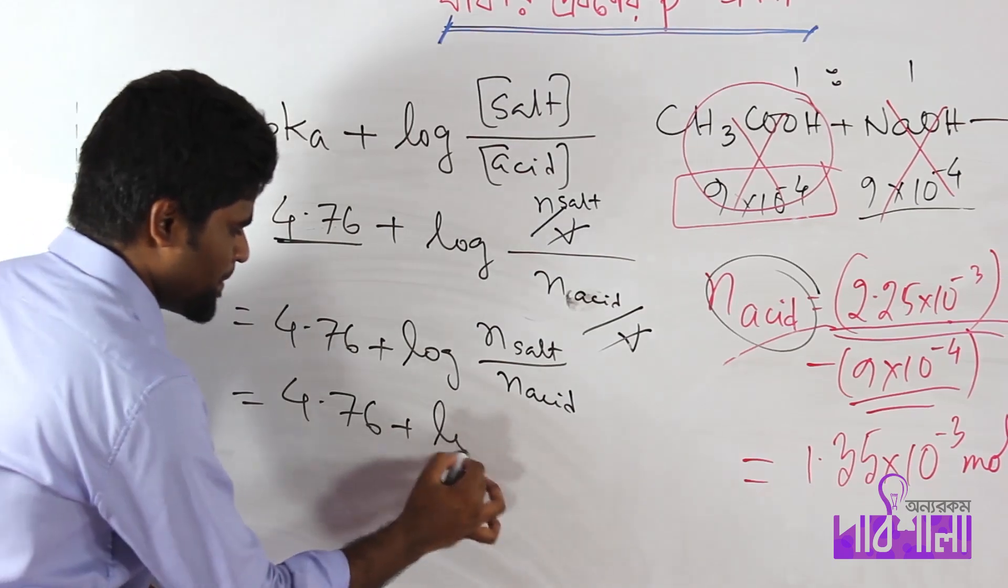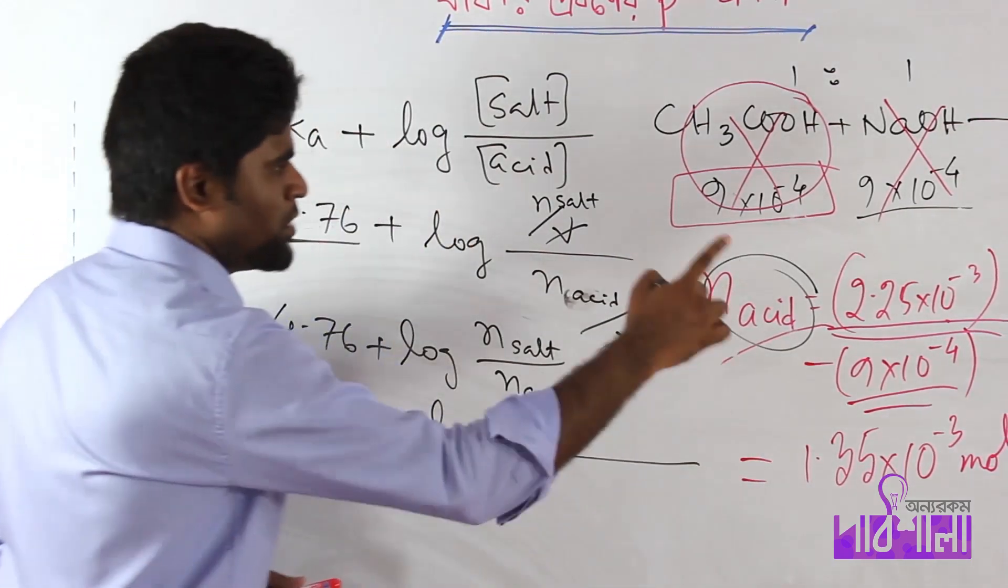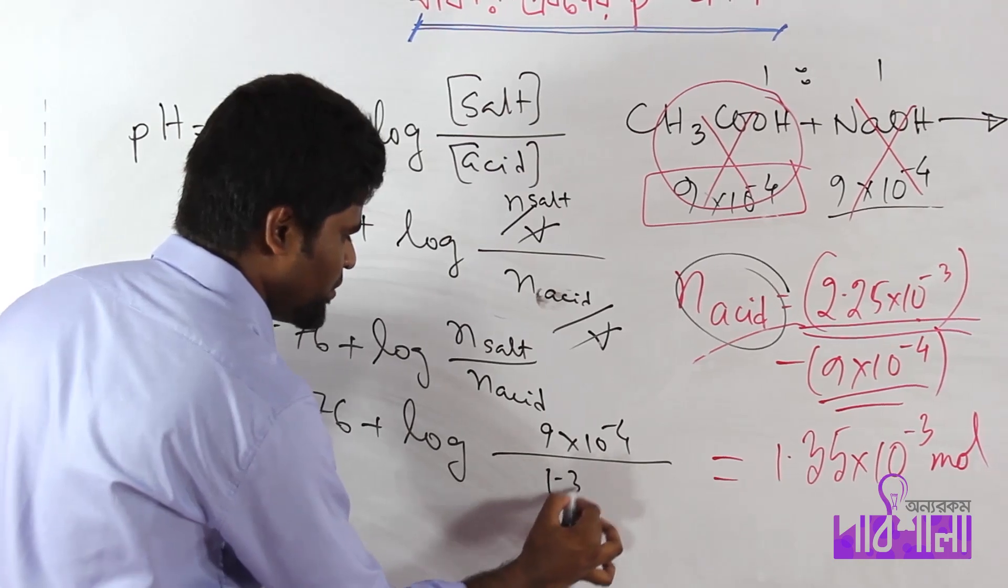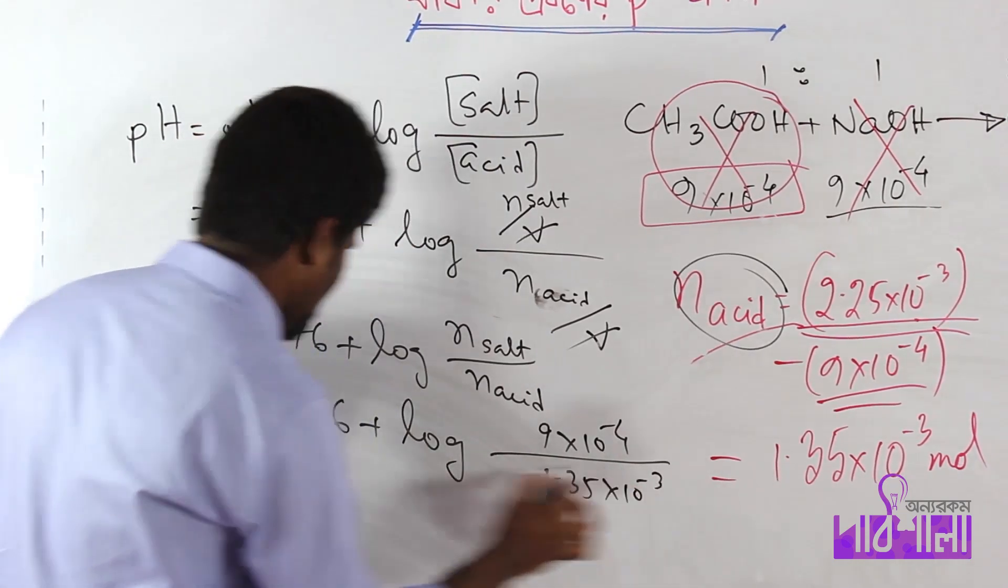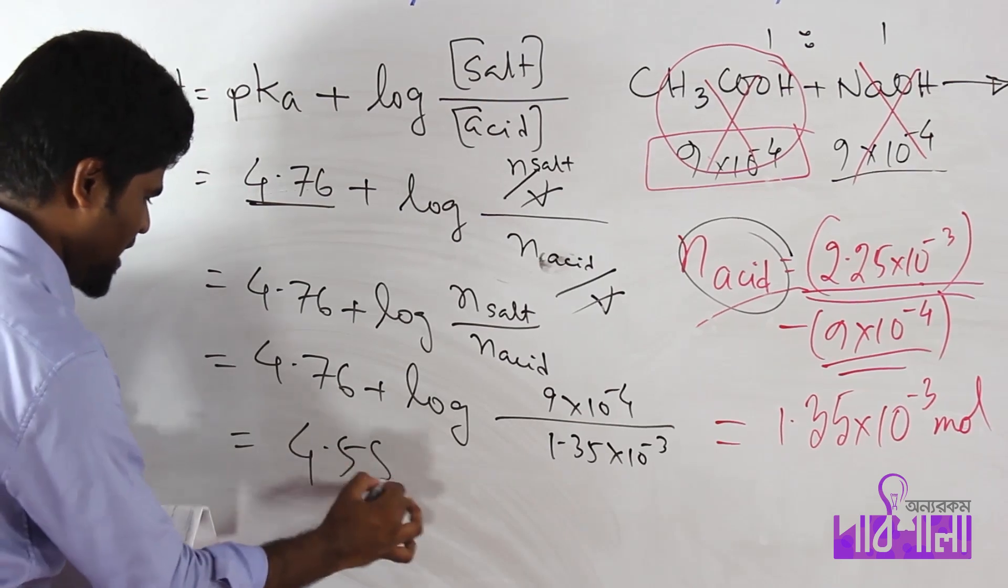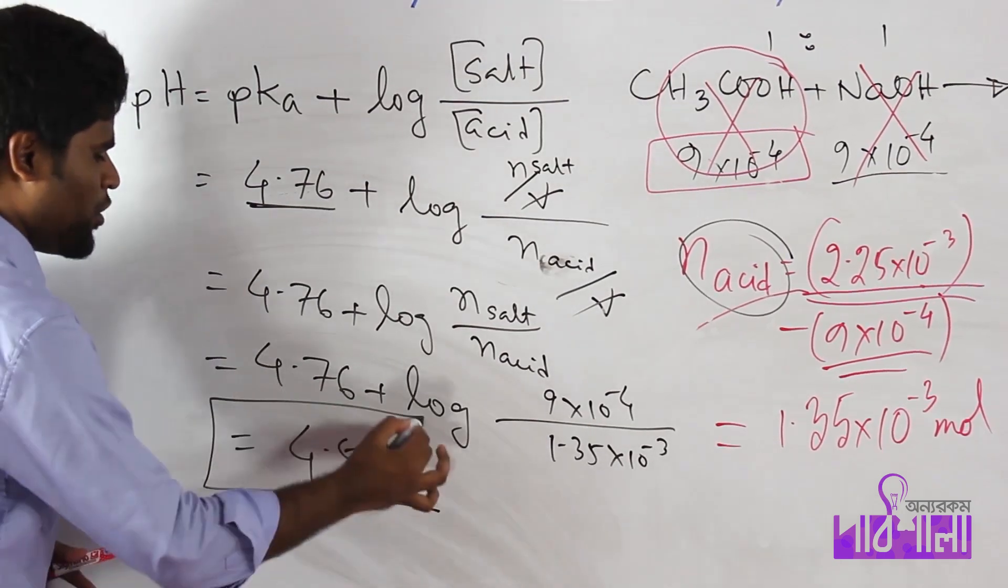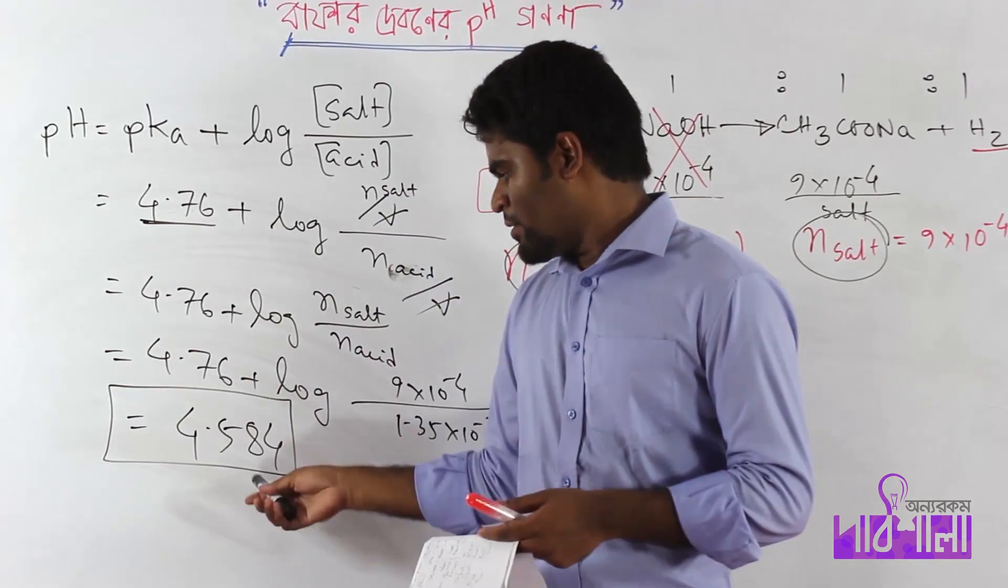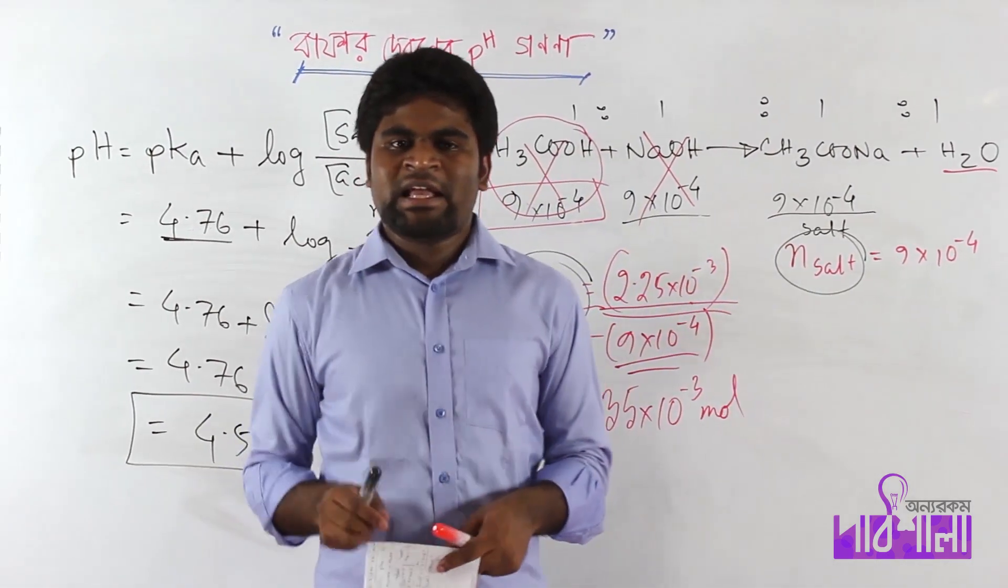This is 4.76 plus the log term which equals 0.64. The n of salt is 9 times 10 to the minus 4 and n of acid is 1.35 into 10 to the power minus 3. If we calculate it, the pH is 4.584.